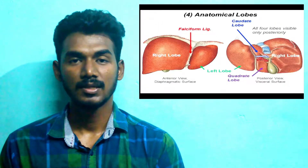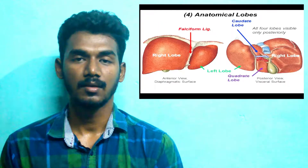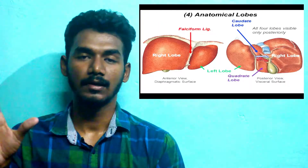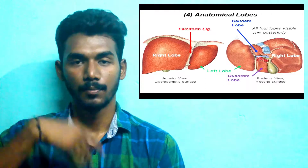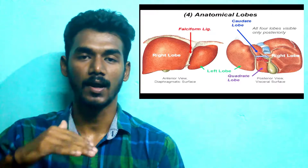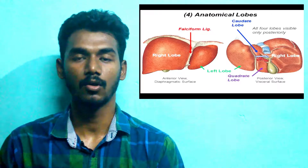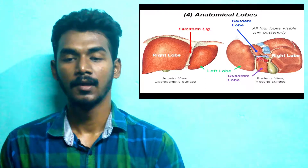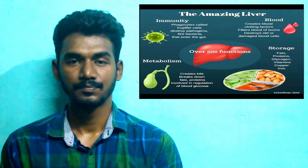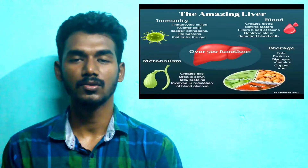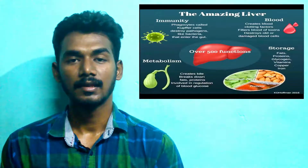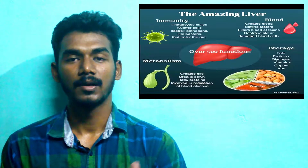The liver is divided into 4 lobes. The liver has approximately 500 functions.